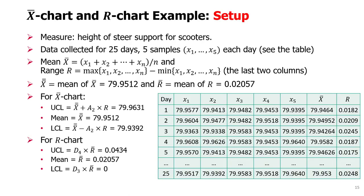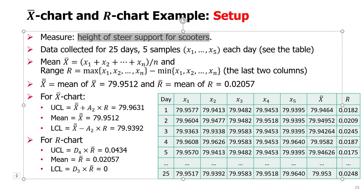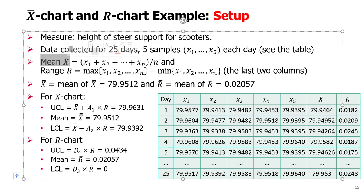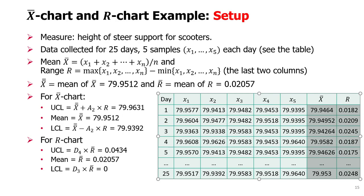Here is an example. The first step will be setting them up. The measure is height of the steer support for scooters. The data collected over 25 days — each day, five samples denoted X1 to X5. Here is the data that I have collected. There is a total of 25 samples over 25 days. These are the measurements, measured very accurately — in millimeters to the fourth digit after the decimal point. The mean and the range are calculated and shown in the last two columns.